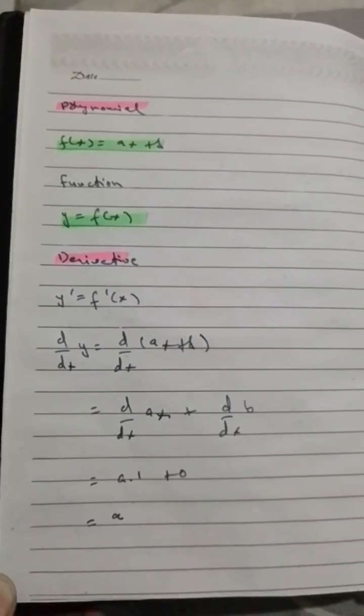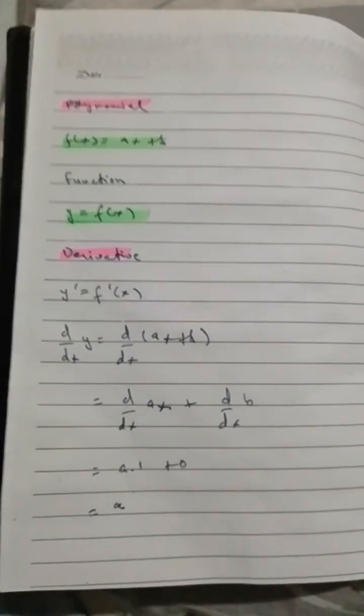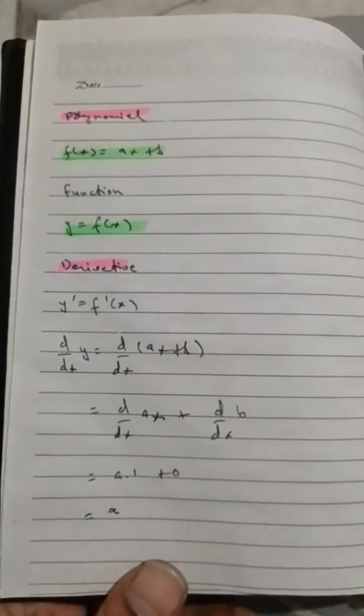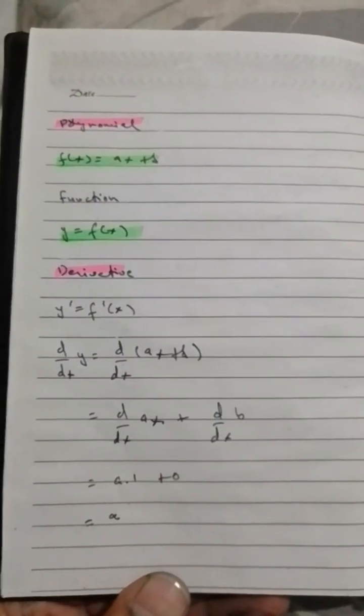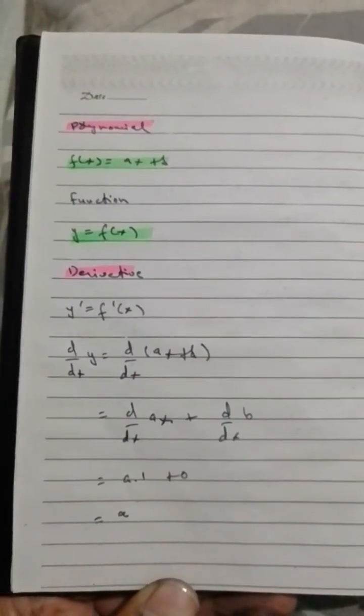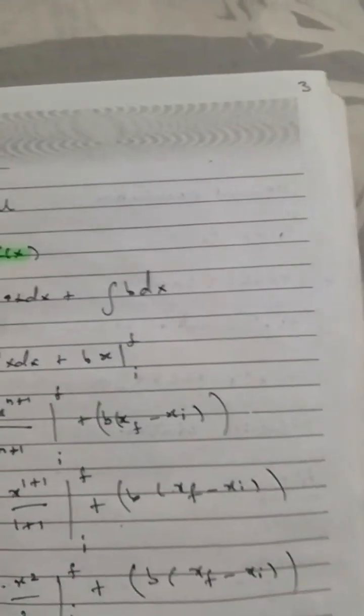And d/dx of ax is a. So you can clearly see what is going on—this is the derivative.